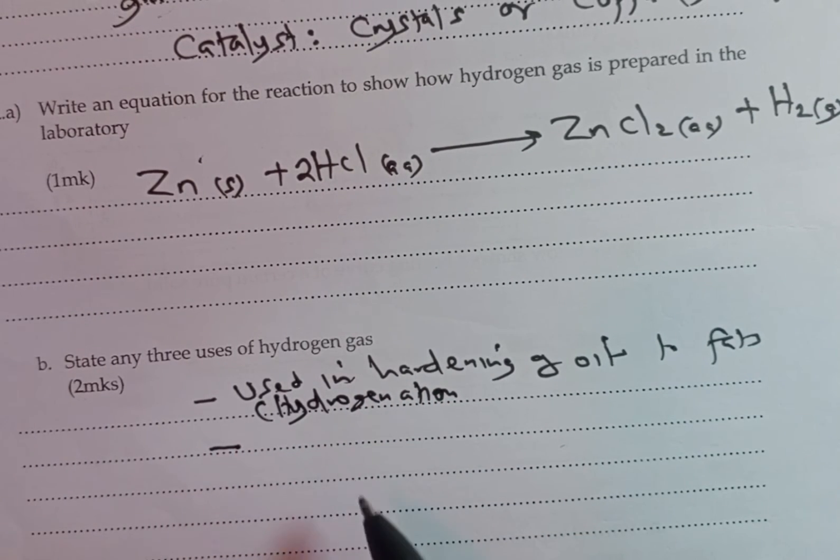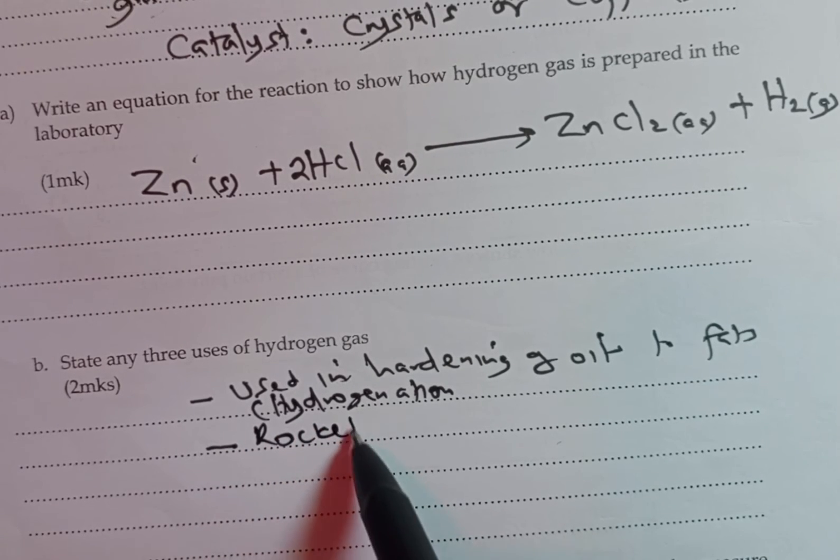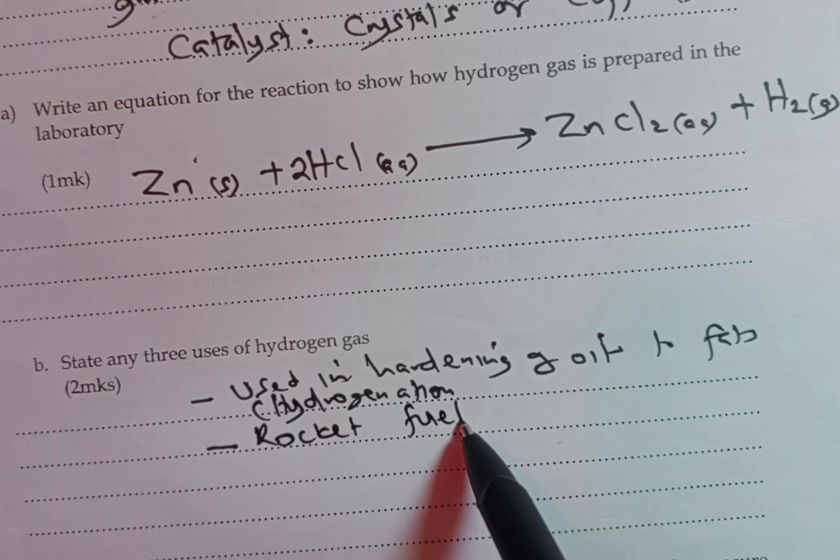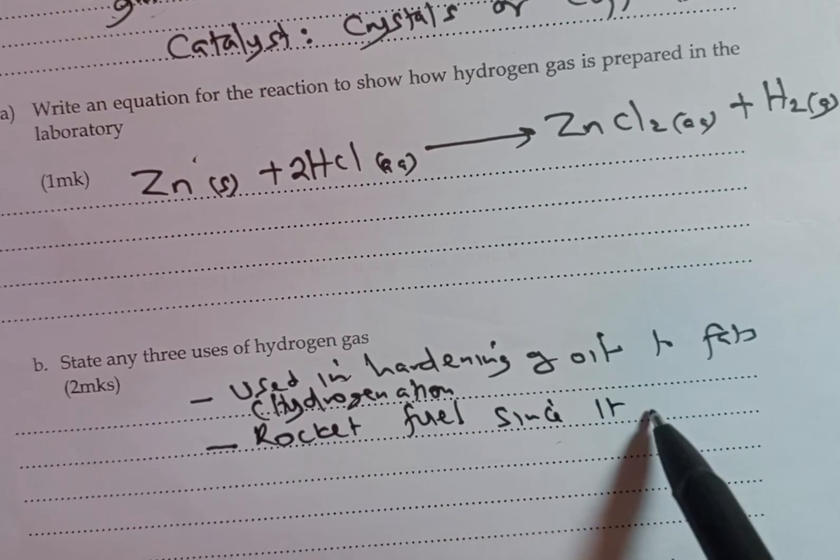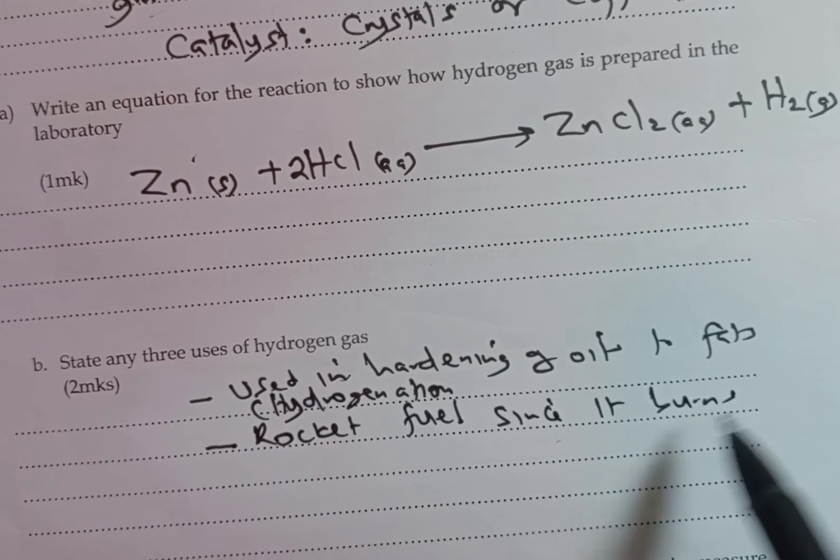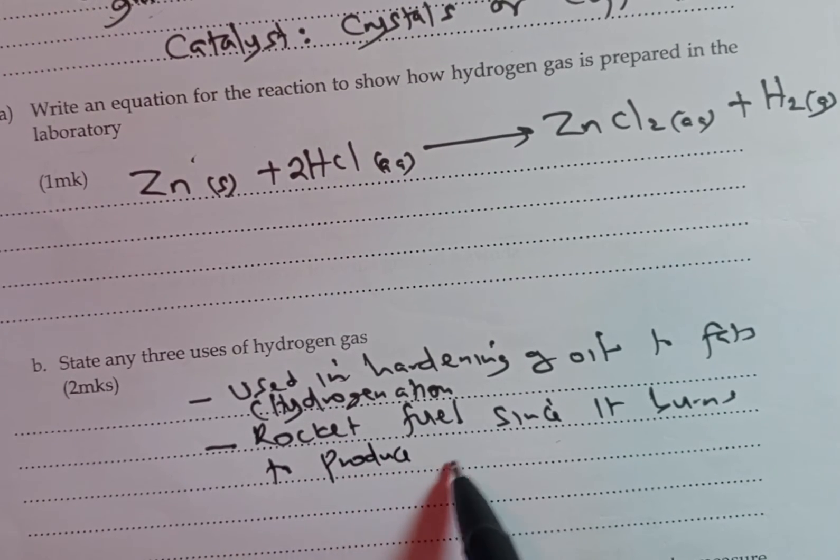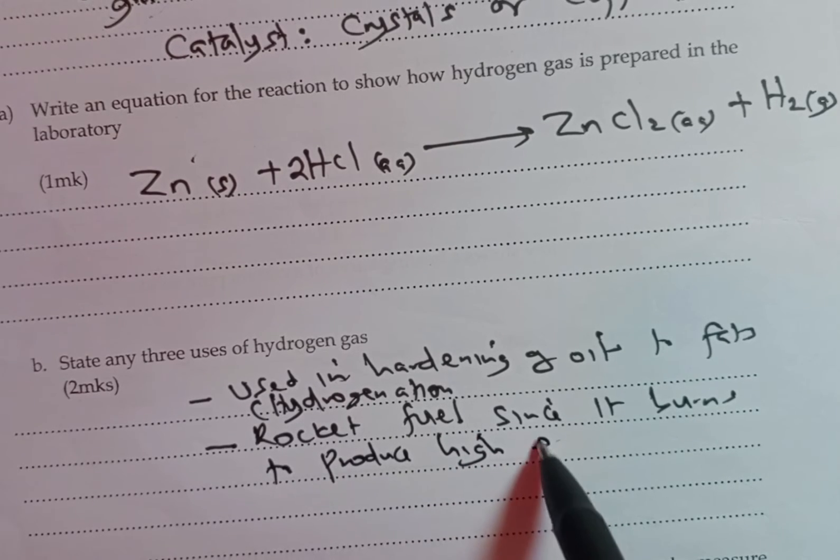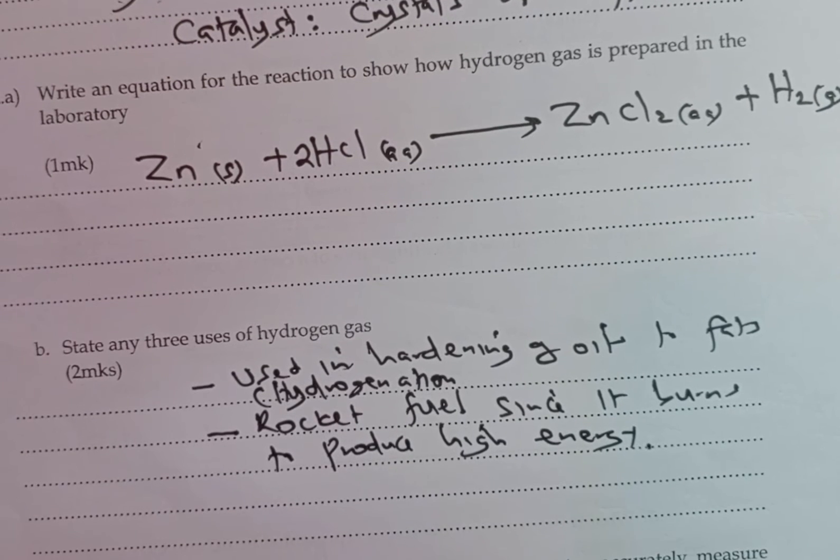Number two: used as rocket fuel since it burns and produces high energy. In other words, it produces high energy when it's burnt.